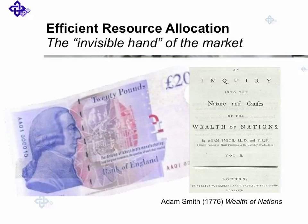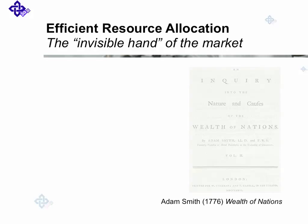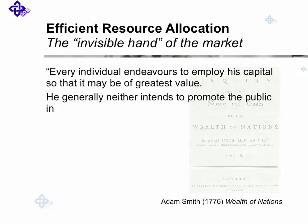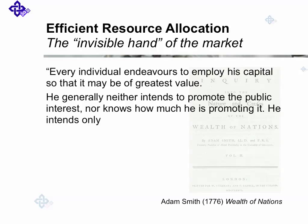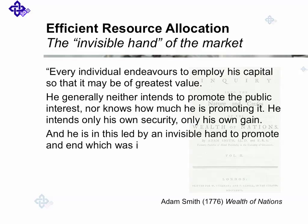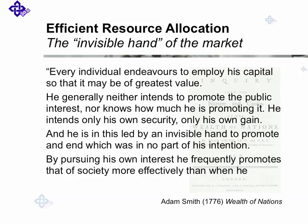Adam Smith was a Scottish moral philosopher and economist. His inquiry into the nature and causes of the wealth of nations is considered the first modern work of economics, and Smith is widely cited as the father of modern economics and capitalism. In it, he says: every individual endeavours to employ his capital so that it may be of greatest value. He generally neither intends to promote the public interest nor knows how much he is promoting it. He intends only his own security, only his own goal. And he is in this led by an invisible hand to promote an end which was in no part of his intention. By pursuing his own interest, he frequently promotes that of society more effectively than when he really intends to promote it.